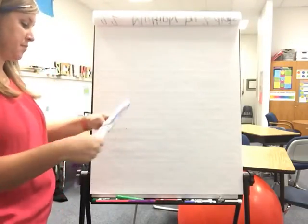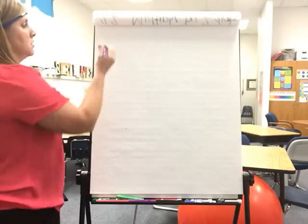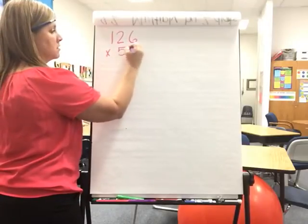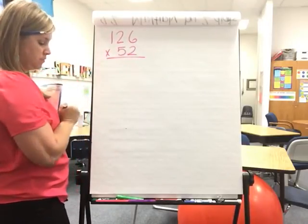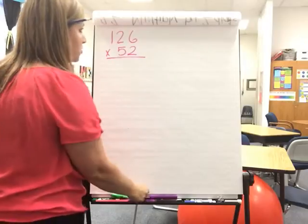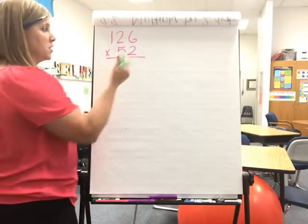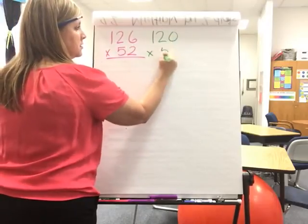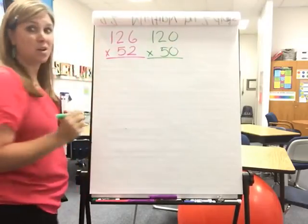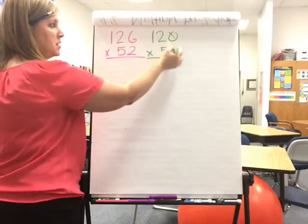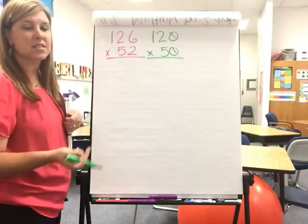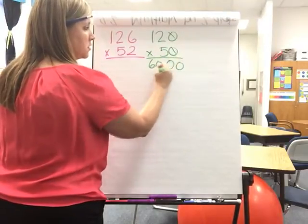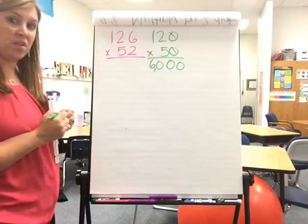For another example, you can have 126 times 52. This one has multiple ones. And the reason why I say multiple ones is when you're looking at that 12, you can leave that 120 times 50. Why, you ask? Well, if I mark this off, do you know what 12 times 5 is? Yes. It is 60.